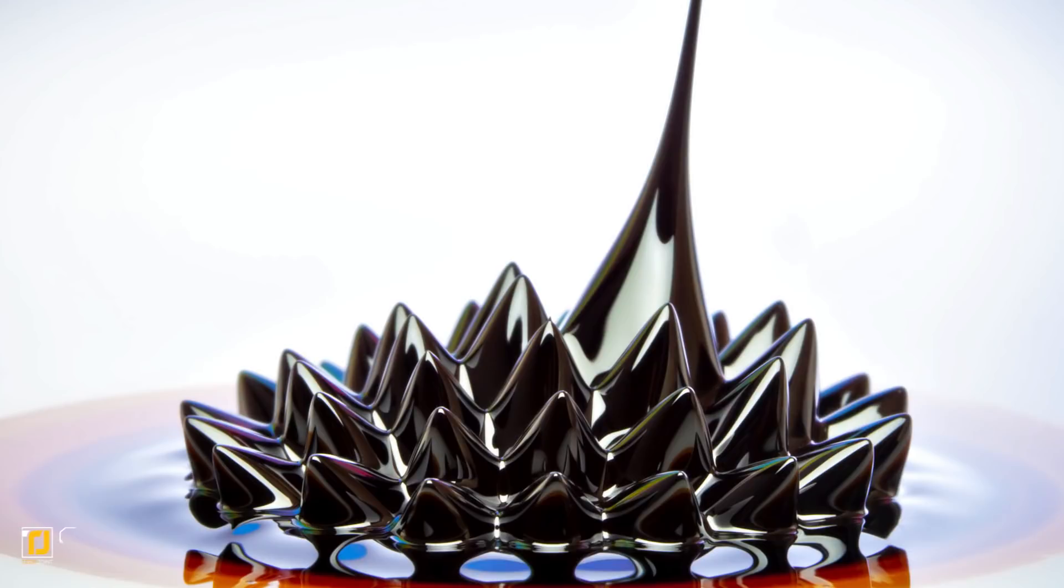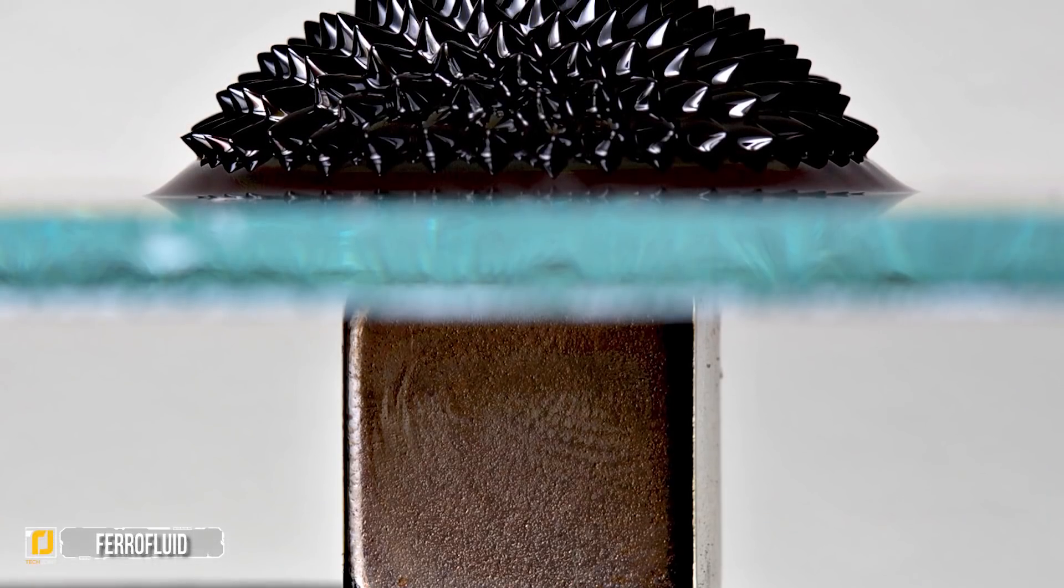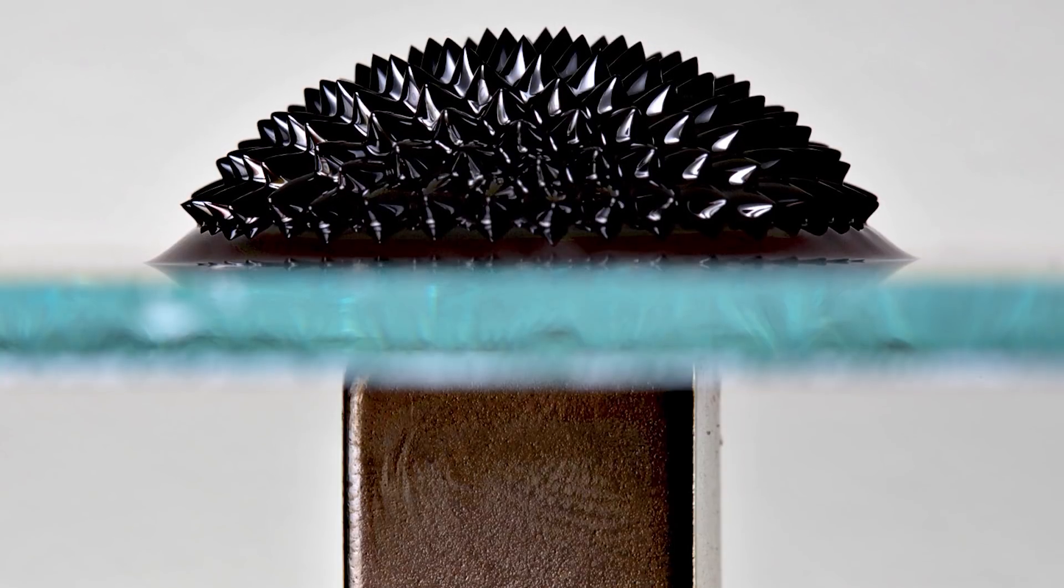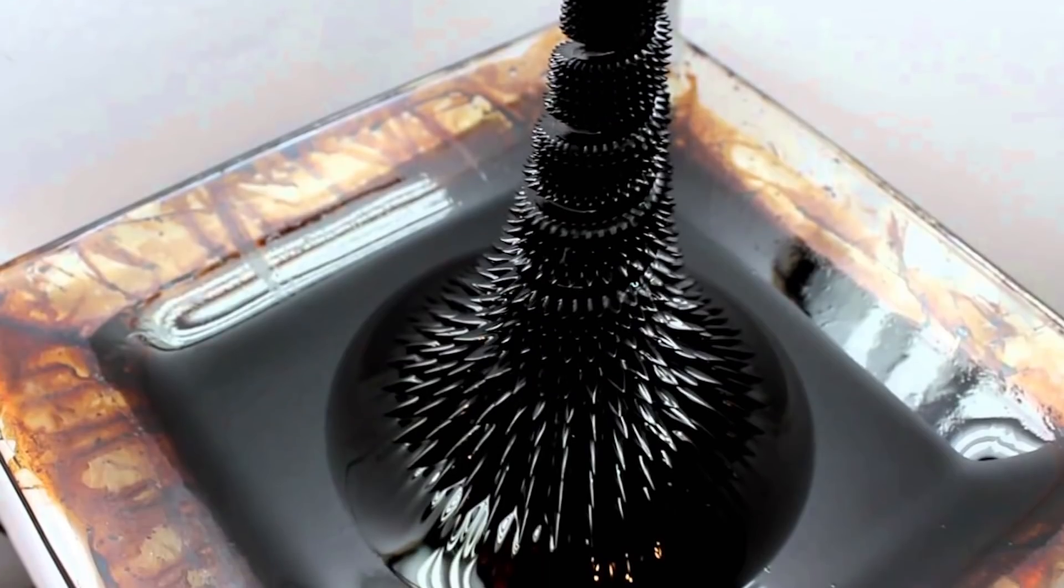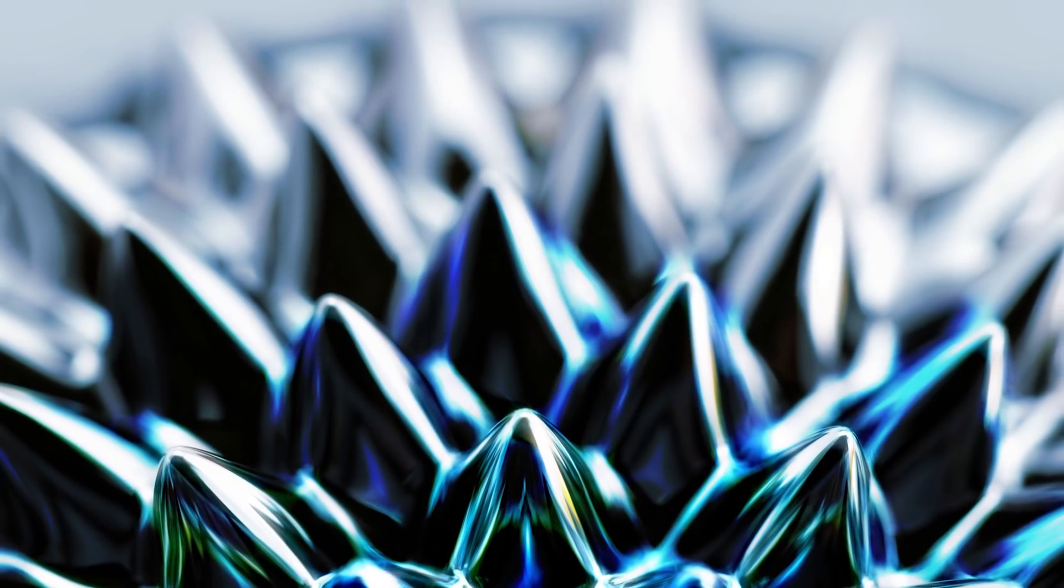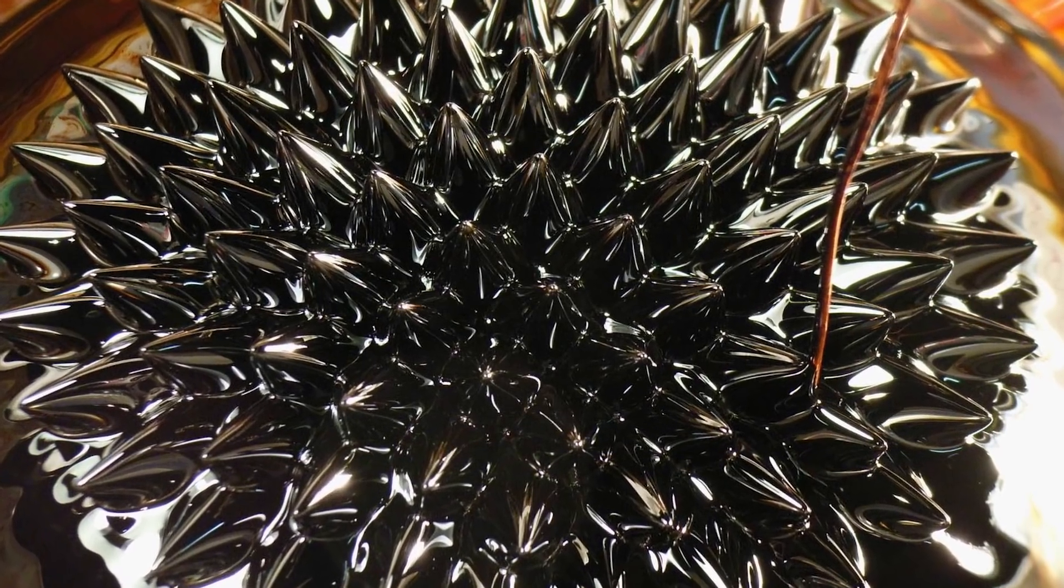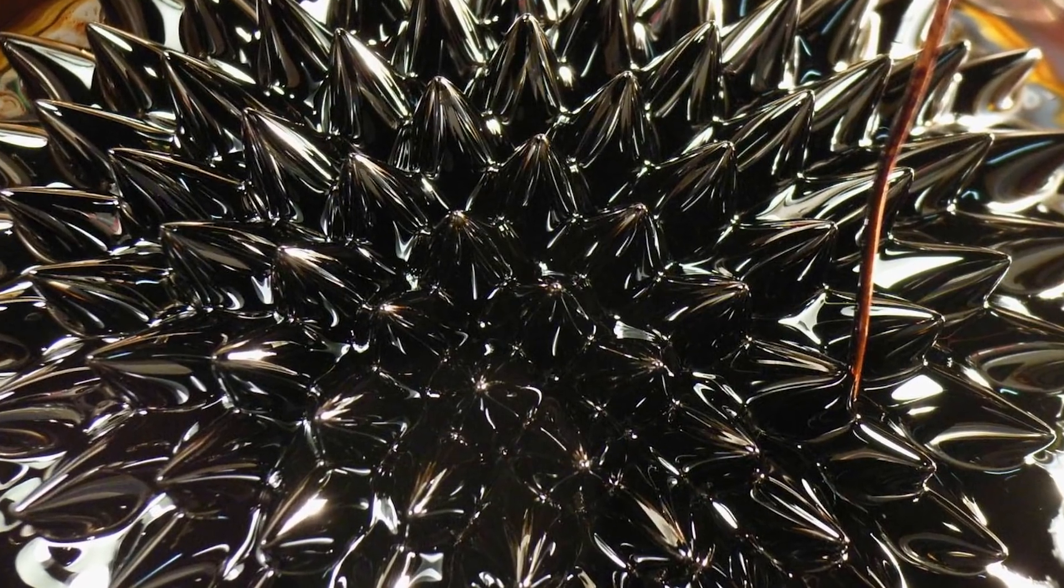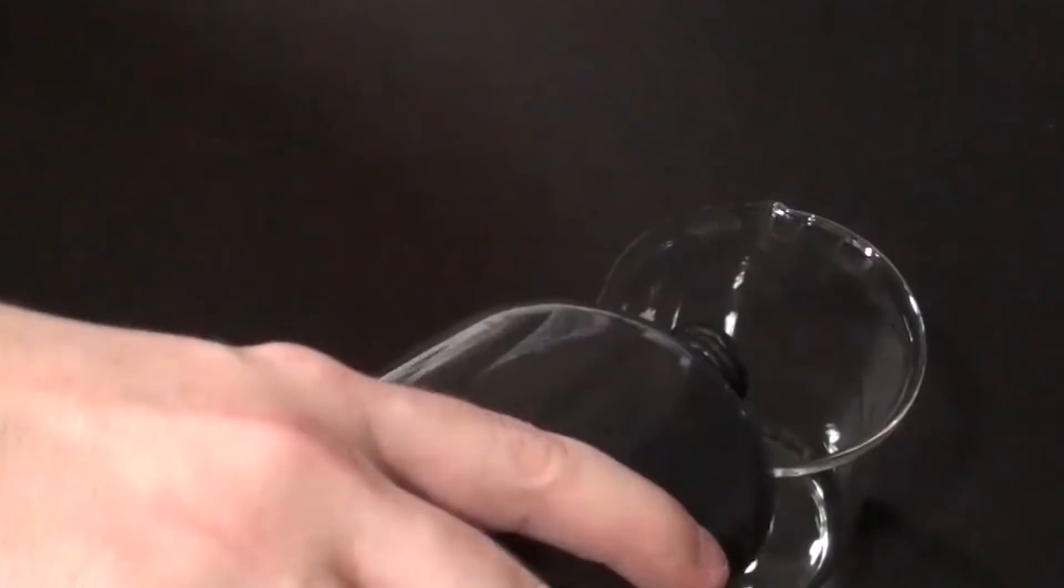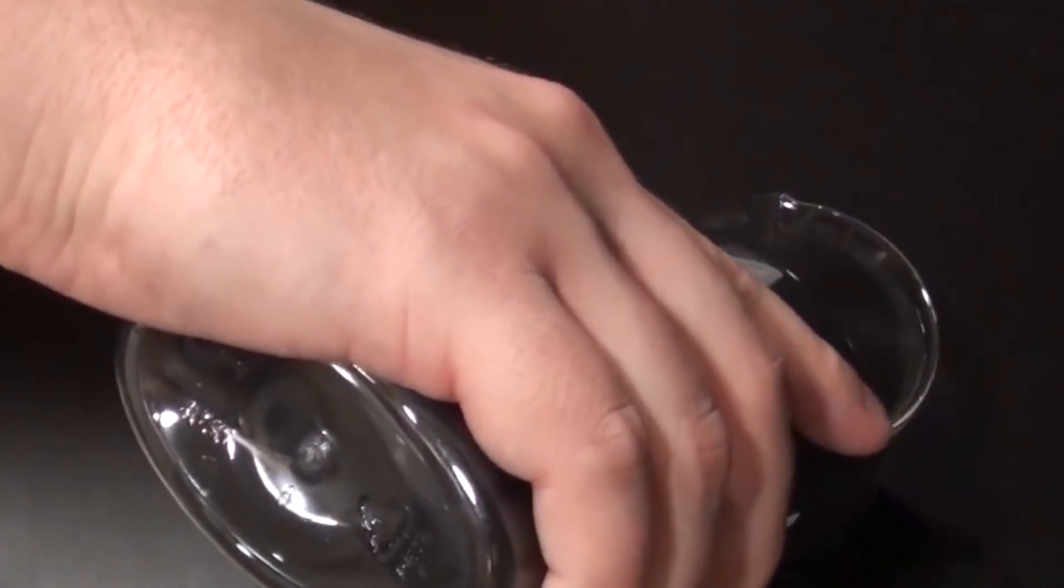Number one: ferrofluid. These fluids contain tiny pieces of metal that measure mere nanometers across, allowing for magnetization to occur. With vegetable oil, a rare earth magnet, and some toner, you can make your own ferrofluid to amaze your friends and have some science fun while you're at it.